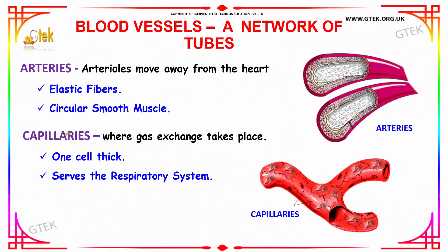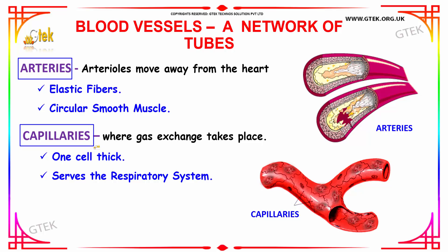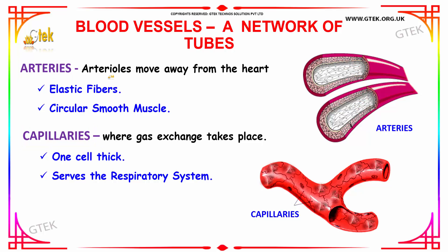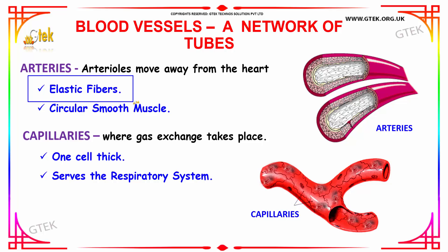Next we will study about blood vessels, which are a network of tubes. Arteries and arterioles move away from the heart, and they are made of elastic fibers composed of circular and smooth muscles.